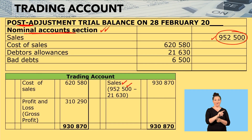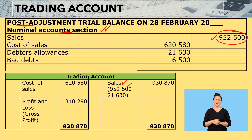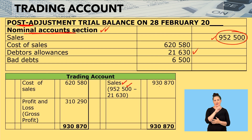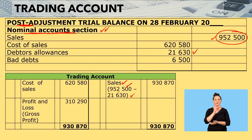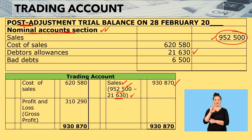In the nominal accounts section that's where you see your sales, which is 952,500. Then we have to subtract what are known as debtors allowances — 21,630. So 952,500 minus 21,630 gives you 930,870.